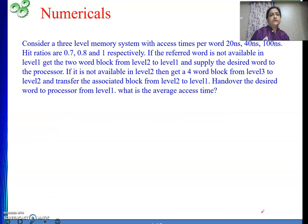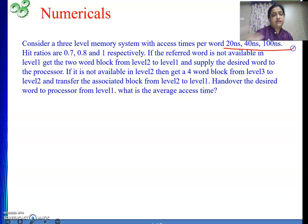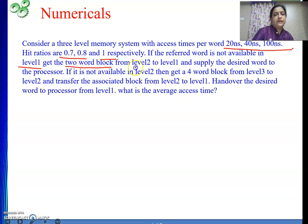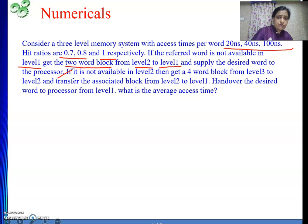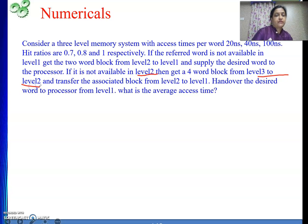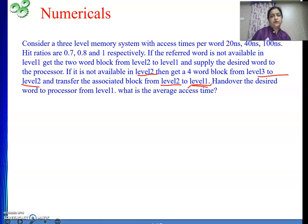Next, one more numerical. Consider a three-level memory system with access times per word of 20, 40, and 100 nanoseconds. Hit ratios are 0.7, 0.8, and 1 respectively. If the required word is not available in level 1, get a two-word block from level 2 to level 1 and supply the desired word to the processor. If it is also not available in level 2, get a four-word block from level 3 to level 2, and transfer the associated block from level 2 to level 1.